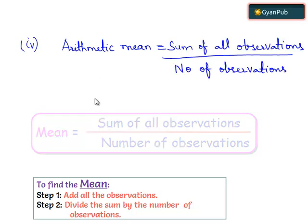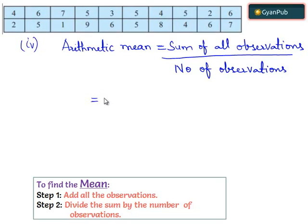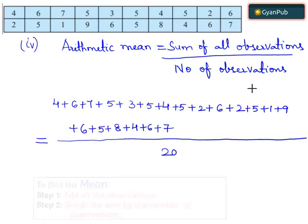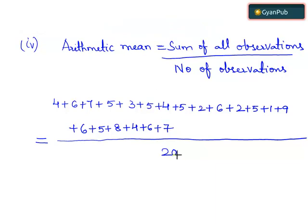According to the arithmetic mean formula, we add all observations from the table and divide by the number of observations, which is 20. By solving this, we get 100 divided by 20, which equals 5. Therefore, the arithmetic mean of the given data is 5.